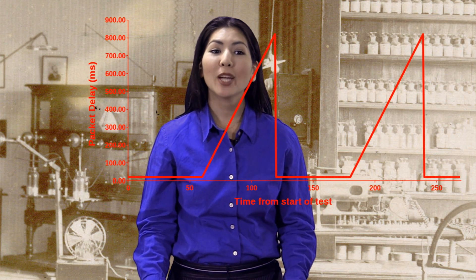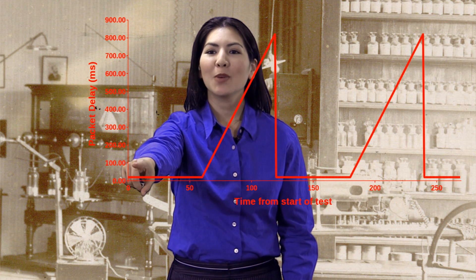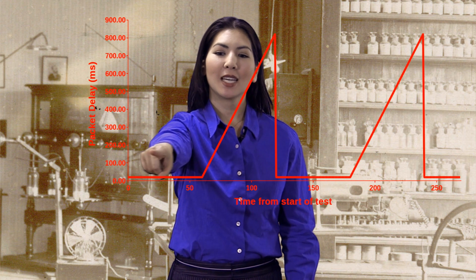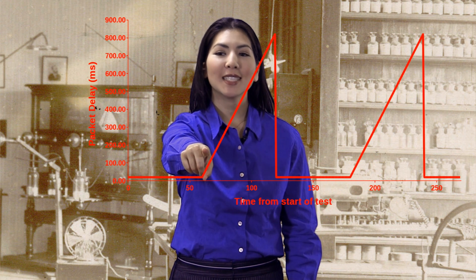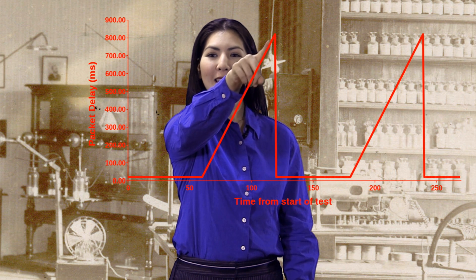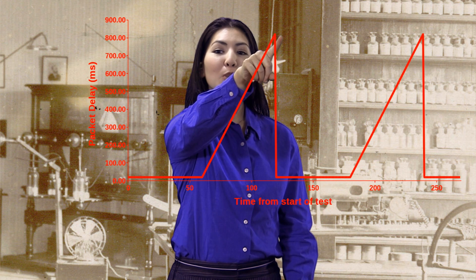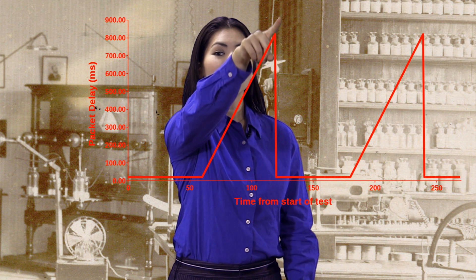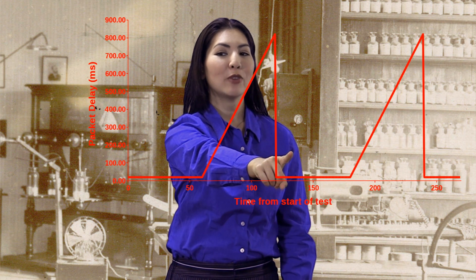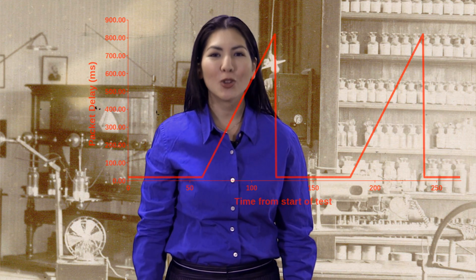We will begin with a baseline of 20 milliseconds of delay. We will hold that baseline for 60 seconds. Then over the next 60 seconds, we will increase the delay. At 120 seconds into the cycle, we will reach 820 milliseconds of delay. And then we will suddenly drop the delay back to our original value of 20. Then we'll start all over again.